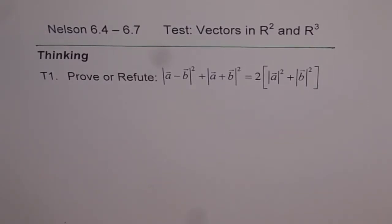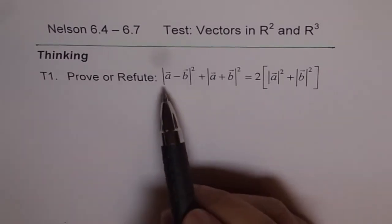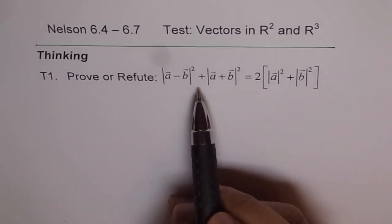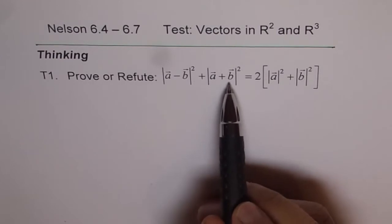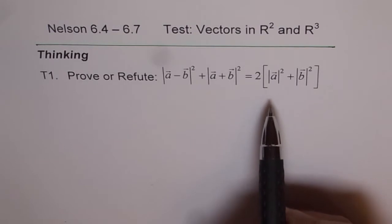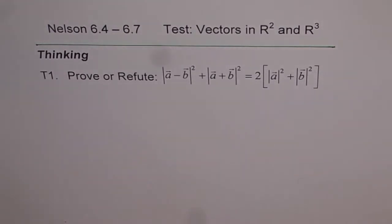Nelson 6.4 to 6.7—these are the chapter numbers of the book. Here we have a test paper preparation on R² and R³. We're starting with thinking problems, T1: prove or refute. The problem states: |a⃗ - b⃗|² + |a⃗ + b⃗|² = 2[|a⃗|² + |b⃗|²]. You have to figure out whether the statement is true or not and prove it.